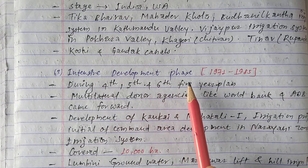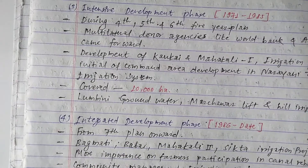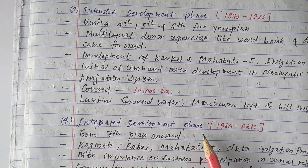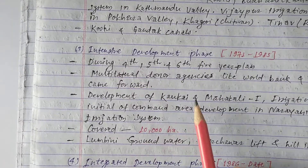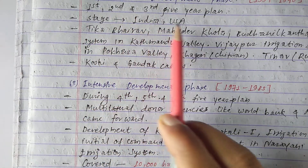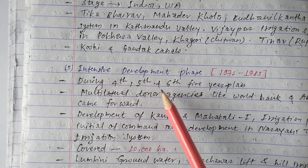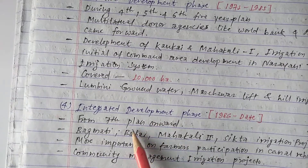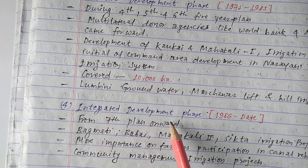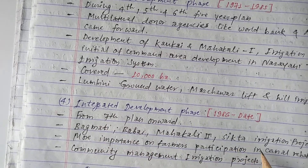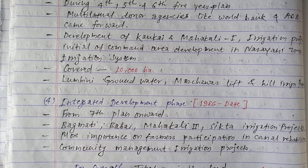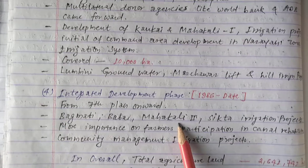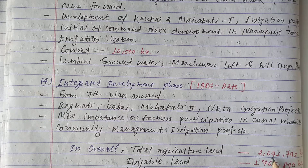The Integrated Development Phase runs from 1986 to the present, starting from the Seventh Plan onward. Examples of this phase include the Bagmati, Babai, Mahakali Second, and Sikta irrigation projects. There is more importance placed on farmer participation in canal rehabilitation and community-managed irrigation projects during this phase.